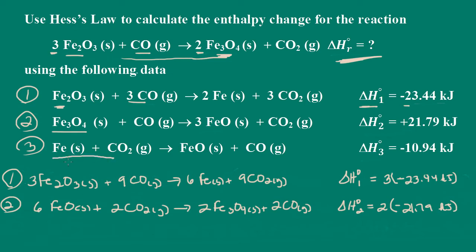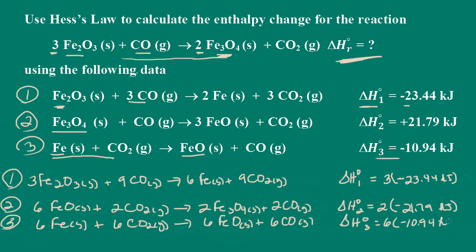Now for equation number 3, I'm going to multiply the coefficients by 6 because I need to cancel out the iron. So we have 6 iron plus 6 carbon dioxide and 6 iron 2 oxides plus 6 carbon monoxides. And I will also have to multiply this delta H by 6. This would be 6 times negative 10.94 kilojoules.